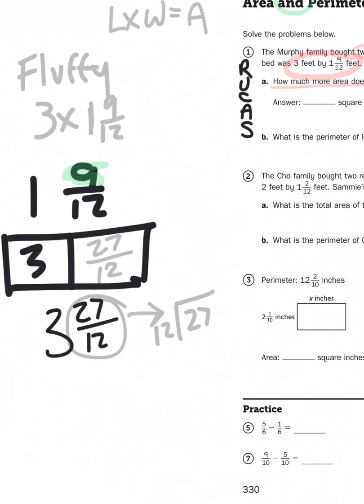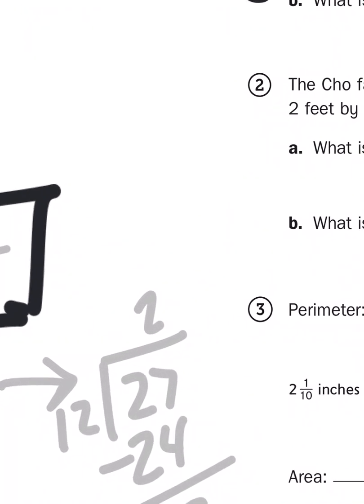12 times 1 is 12. 12 times 2 is 24. 12 times 3, that's 36. That's too big. So the best I can do is 2 groups of 12, because 2 times 12 is 24. And that leaves me a remainder of 3, 3 twelfths.